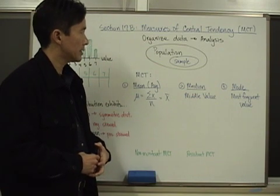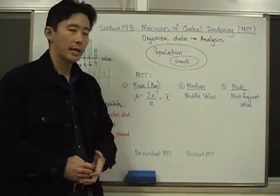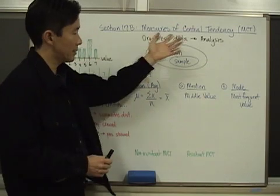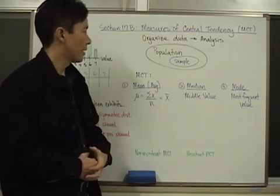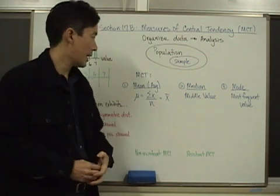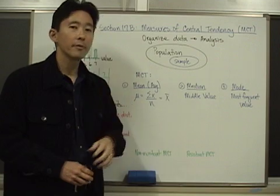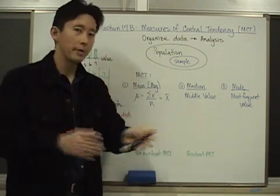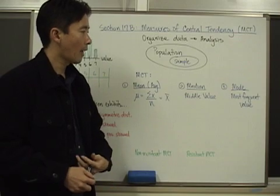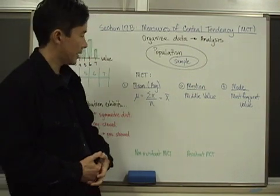Let's look at how we can analyze our data by examining where the data tends to centralize — that's why we call this the measures of central tendency. The three measures are: the mean, which is the average; the median, which is the middle value when you sort your information from lowest to highest; and the mode, which is the most frequent value.